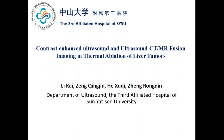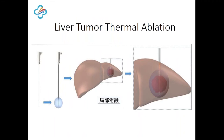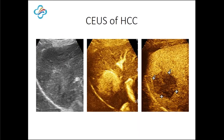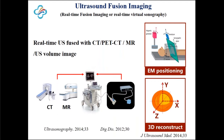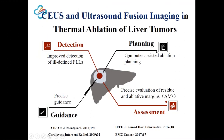Thermal ablation is one of the most important curative treatment methods for early stage HCC. It can be guided by CT or B-mode ultrasound. But now we have CEUS and fusion imaging. In this presentation, I will talk about our experience using CEUS and fusion imaging in thermal ablation of liver tumors, including detection, guidance, planning, and assessment of treatment results.